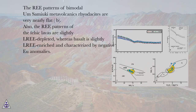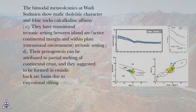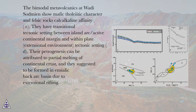The REE patterns of felsic lavas are slightly REE-depleted, whereas basalt is slightly REE-enriched and characterized by negative Eu anomalies. The trace element characteristics of both mafic and felsic members of the Shadli metavolcanics indicate these rocks originated in a magmatic rift. The bimodal metavolcanics at Wadi Sodmian show mafic tholeiitic character and felsic rocks calc-alkaline affinity (C), with a transitional tectonic setting between island arc/active continental margin and within-plate extensional environment, and their petrogenesis can be attributed to partial melting of continental crust, suggesting formation in an ensialic back-arc basin due to extensional rifting.